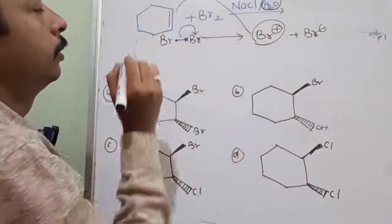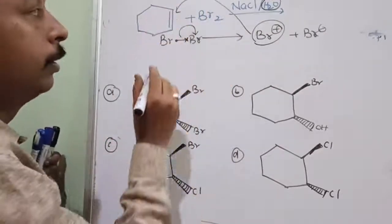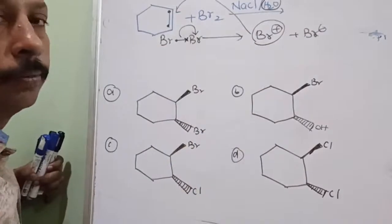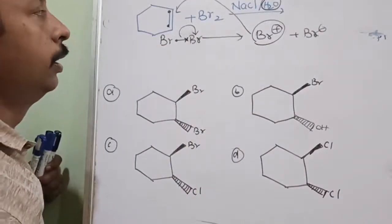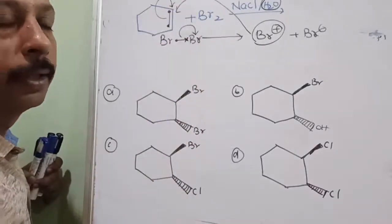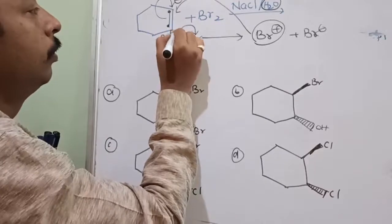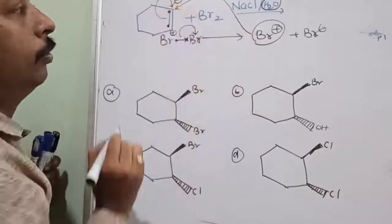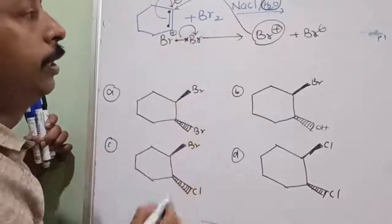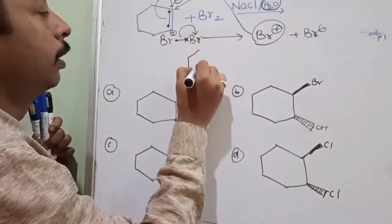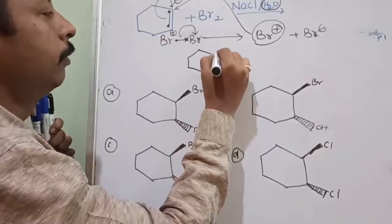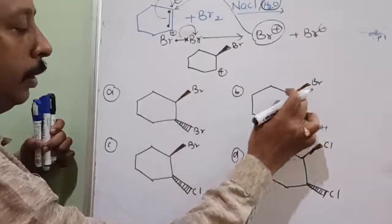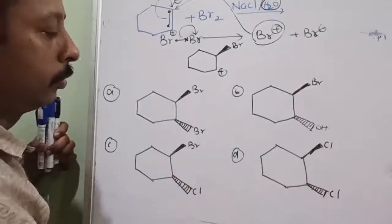Br⁻ is the nucleophile. This will initiate the reaction — this will go and react. Suppose when it is going, both sides are the same. So let us take these two electrons — this pi bond electron in the presence of Br⁺ will also undergo heterolytic cleavage. Let us say these electrons are transferred here. So this carbon is going to be negative, and this is going to be positive. Bromine will go this side. So the intermediate product — in between, it is not a complete product — has bromine attached, and here it is positive. And here it is chlorine — that is possible.